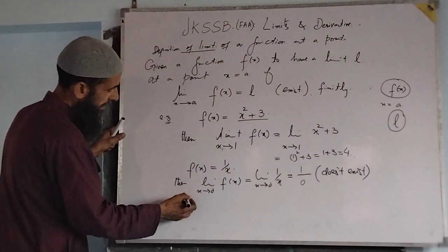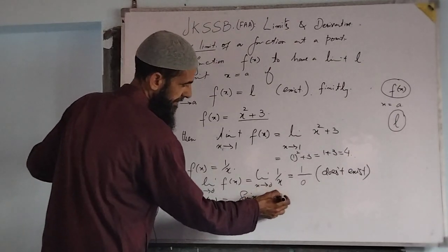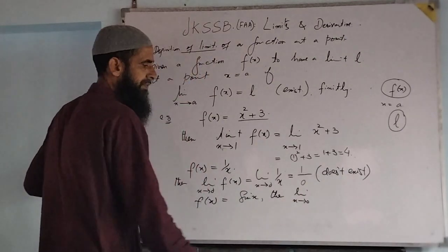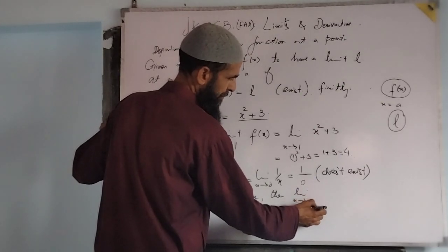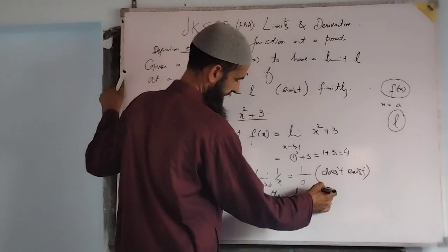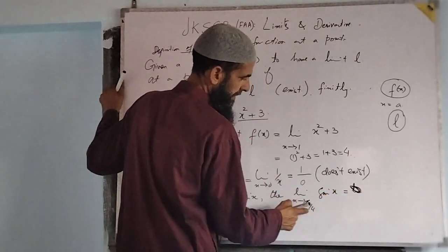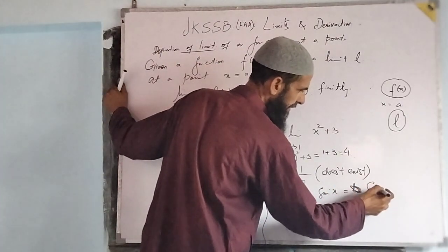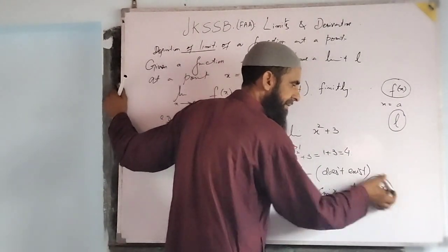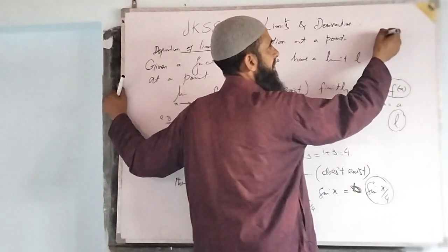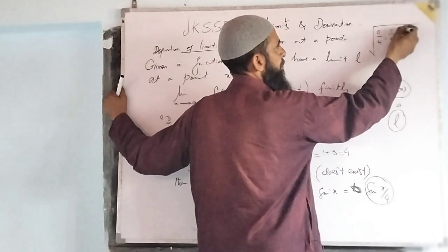Next example: if f(x) is equal to sin(x), then limit x tends to pi by 4 of sin(x). Replace x by pi by 4 — it is sin(pi by 4). To evaluate this, remember the sine values at standard angles. The pattern uses 0 by 4, 1 by 4, 2 by 4, 3 by 4, 4 by 4 inside a square root divided by 2.